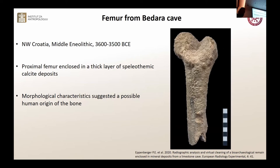This is the case of Beđara cave, located in Žumberak in northwestern Croatia, dated to about the middle of the 4th millennium BCE — the Middle Neolithic. Basically, as you can see from this example, speleologists found this specimen and took it out. Morphologically, it resembles the proximal femur, including a thick layer of stalactite deposits.